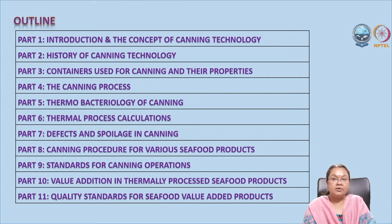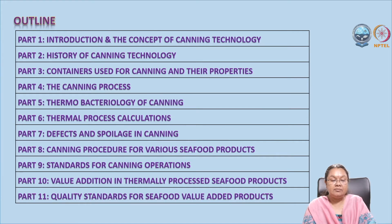In the third part, we will discuss about the containers used in canning and the properties of these canning materials. In the fourth part, we will discuss the canning process in general. In the fifth part, we will discuss microorganisms and spoilages associated with canning, and why we concentrate specifically on Clostridium. In the sixth part, we will discuss thermal process calculations. In the seventh part, we will discuss spoilages of cans and how they can be detected. In the eighth part, we will discuss canning procedures, which differ from product to product, along with the standards involved for each process.